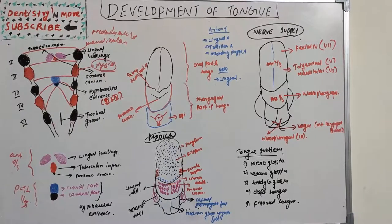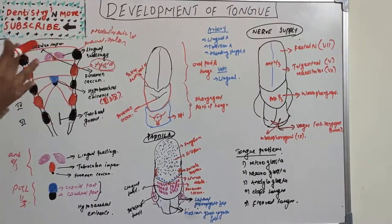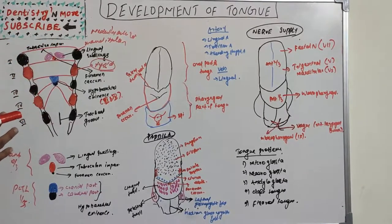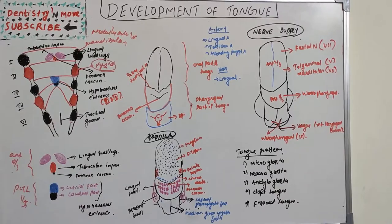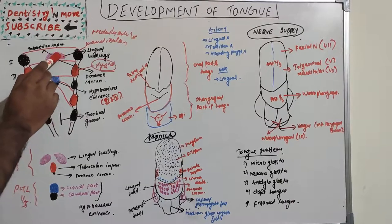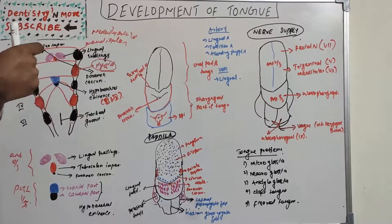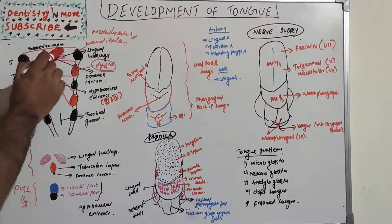The lingual swellings are present on the lateral part of the mandibular process. They are mesenchymal thickenings that develop to form the lateral sides of the tuberculum impar, and ultimately the anterior two-thirds of the tongue. These lingual swellings merge with each other and form the mucous membrane of the anterior two-thirds of the tongue. So lingual swellings and tuberculum impar together form the anterior two-thirds.